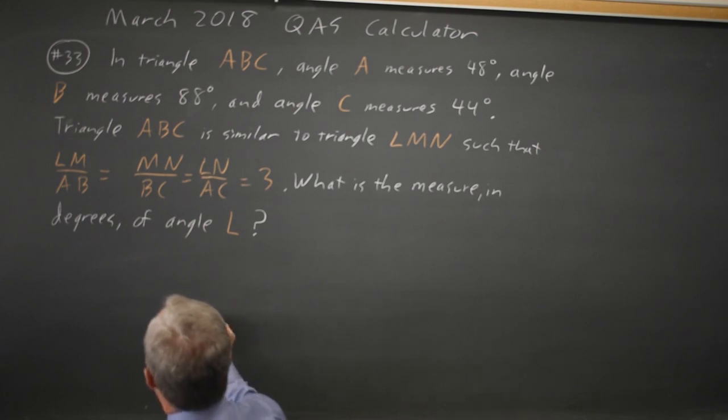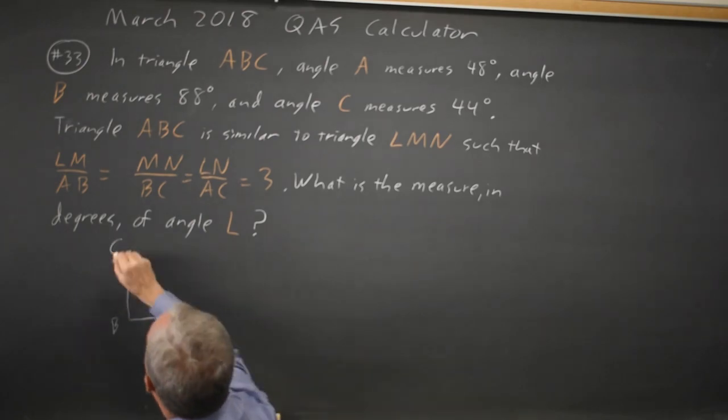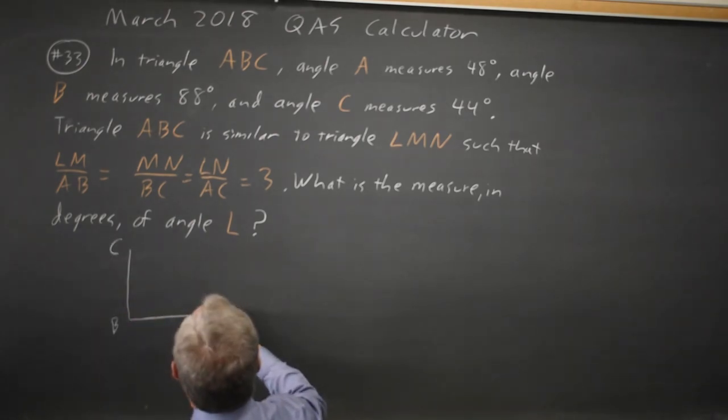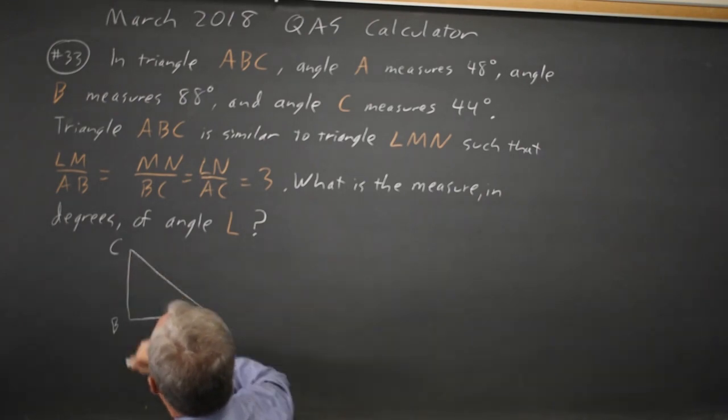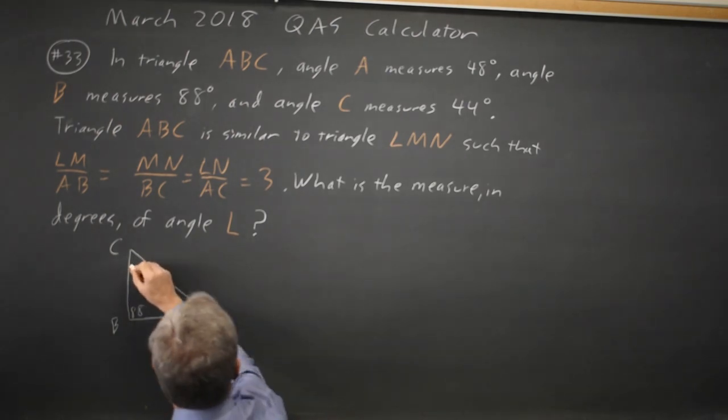Angle B is 88 degrees, which is just barely less than 90. And angles A and B are close. A is 48 degrees, and C is 44.